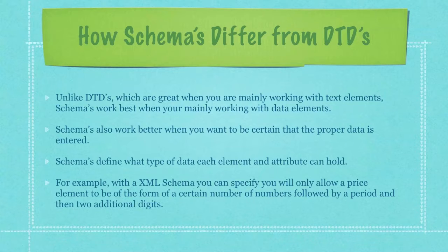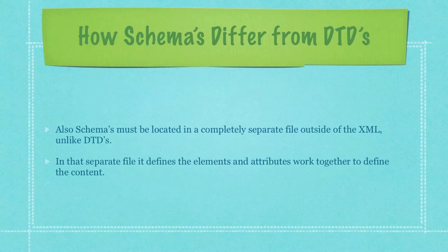Schemas define what type of data each element and attribute can hold. For example, with an XML schema you can specify that you only allow a price element to be of the form of a certain number of digits followed by a decimal and then two additional digits. Also, schemas must be located in a completely separate file outside of the XML, unlike DTDs.